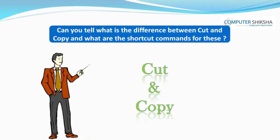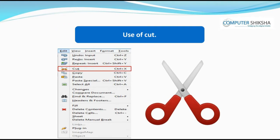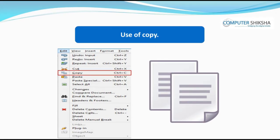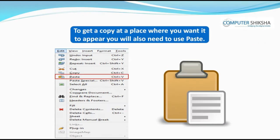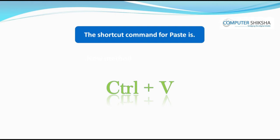Can you tell what is the difference between cut and copy and what are the shortcut commands for these? With the help of cut, you can remove a word or object from the place where you do not want it. However, with copy, you can copy the word or object and the original remains in its place. To get a copy at a place where you want it to appear, you will also need to use paste. The shortcut command for cut is Ctrl+X, for copy it is Ctrl+C, and for paste you will use Ctrl+V.